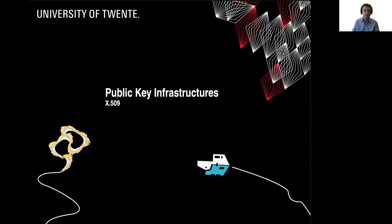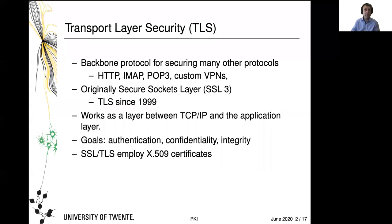Welcome to this third part of our lecture on public key infrastructures. This time we're going to talk about X.509. I mentioned X.509 as an old standard, but it is used in fairly modern technology as well, in particular in Transport Layer Security, also called TLS.